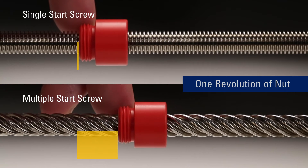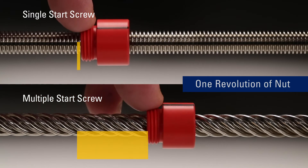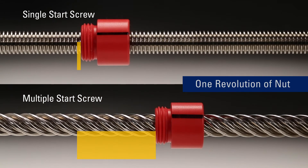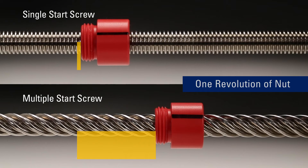This leads us to the number of starts in a screw. When the lead and pitch are the same, the screw is a single start screw. However, when the lead is greater than the pitch, this results in a multiple start screw, and each start represents a separate thread.